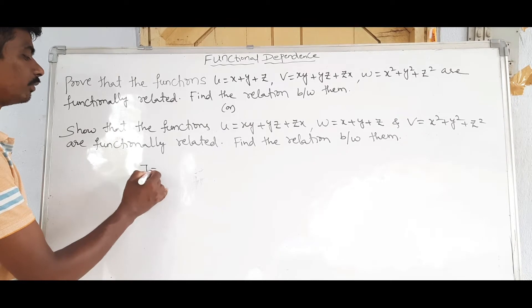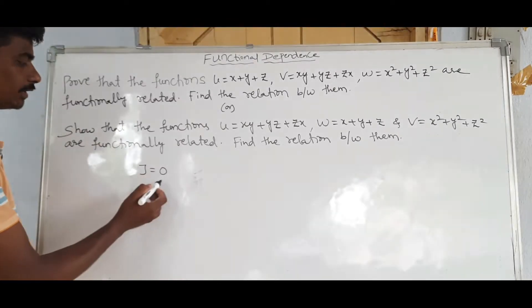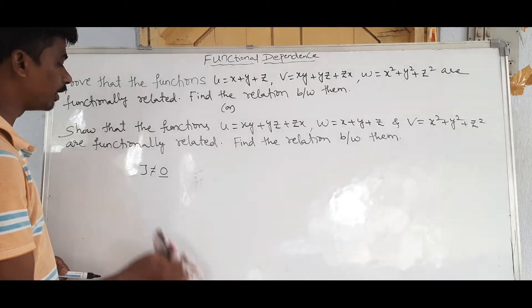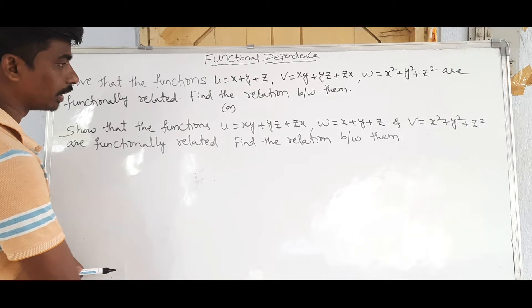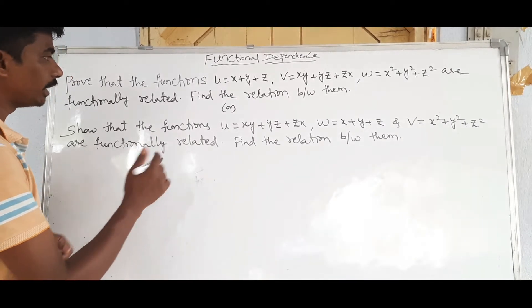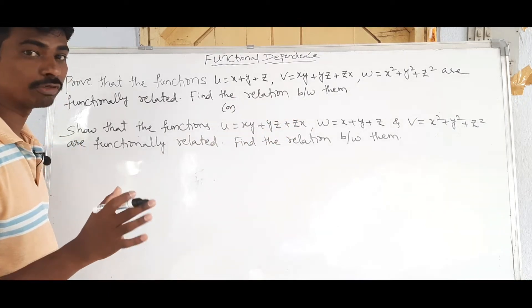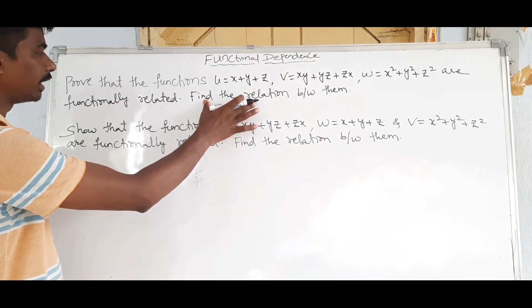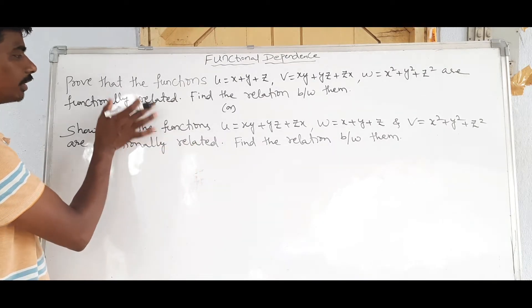J is equal to 0 — J means Jacobian. If the Jacobian is equal to 0, it is Functionally Dependent. If it is not equal to 0, it is Functionally Independent. We learn how to determine this. If we find a relation between the functions, it is Functionally Dependent.